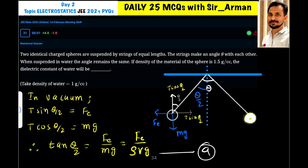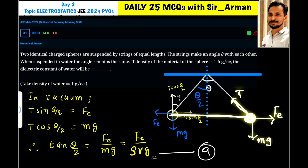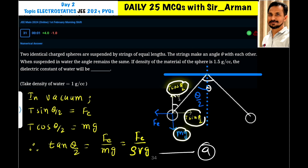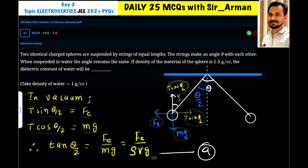Consider a charged sphere of mass m. Gravity pulls it downward with force mg, and the electrostatic repulsive force Fe pushes the charge away. These two forces generate tension T in the string. Since the half-angle is theta by 2, T cos(θ/2) balances mg and T sin(θ/2) balances Fe. Taking the ratio, T cancels, giving tan(θ/2) = Fe/mg, where mass equals density of sphere times volume.